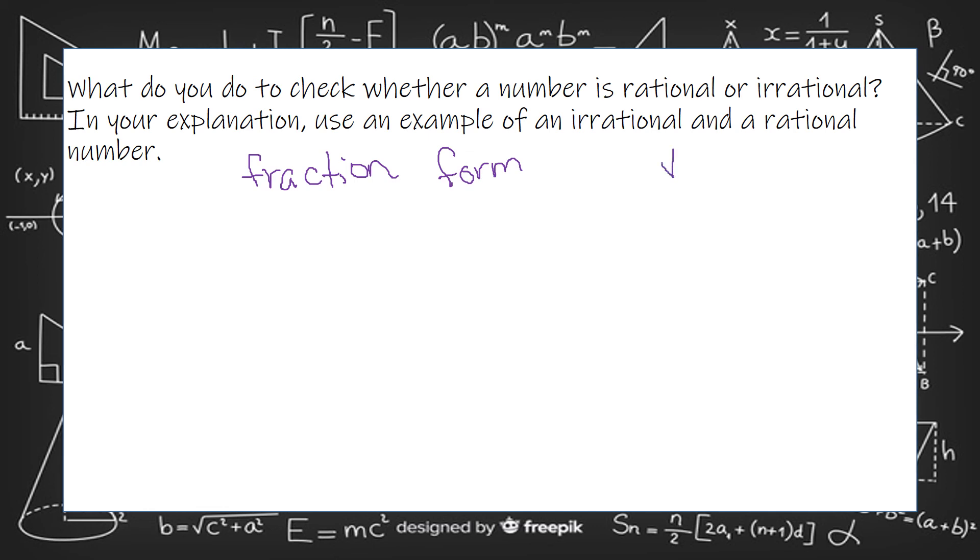And use an example of an irrational and a rational number. So an irrational number we already talked about is one of those squares that is not a perfect square. So I could say square root of 22. A rational number is one that can be put into fraction form. It could be one half. It could be 64,